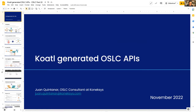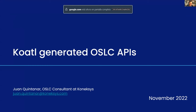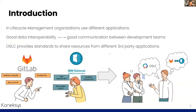During the lifecycle management of products, software, or applications, organizations use different applications to fulfill different purposes. For example, we could use GitLab to create and manage source code for a specific project, or any other application.